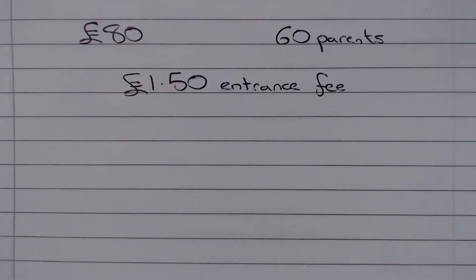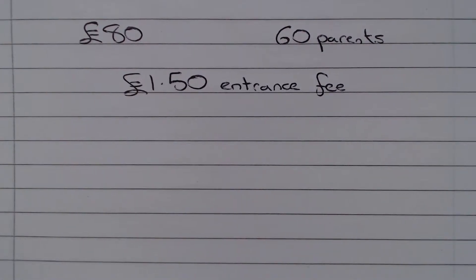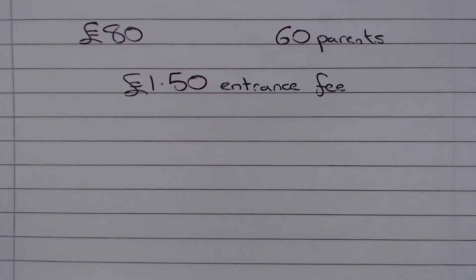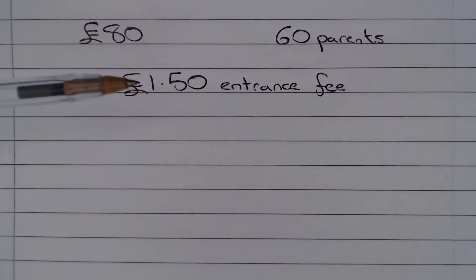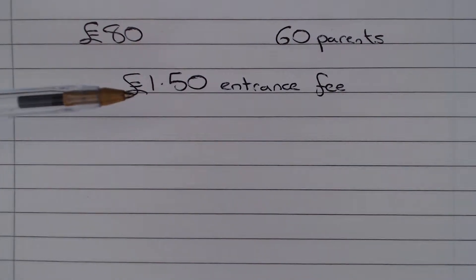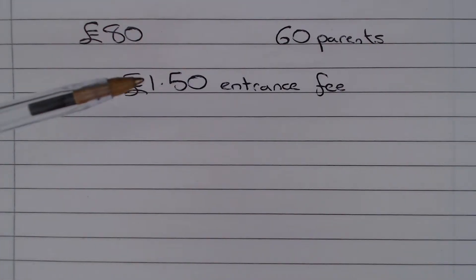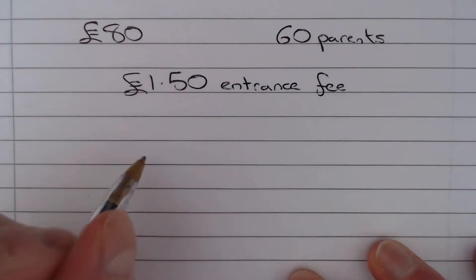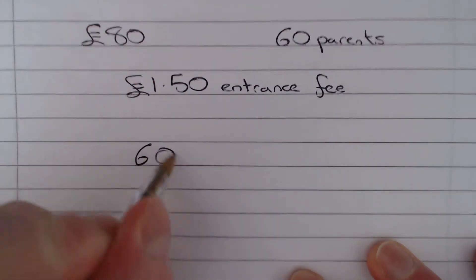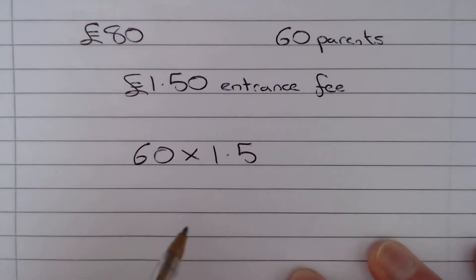So what we need to do is to work out the difference between all the costs and the revenue. In other words, let's work out how much the parents paid in total for the entrance fee. If 60 parents each paid £1.50, then the calculation we need to do is 60 multiplied by 1.5.